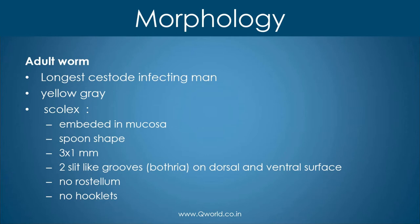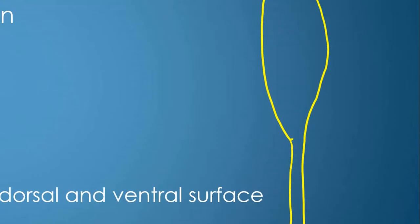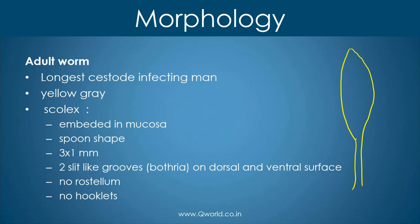Morphology. As we have already learned, this is the longest or largest cestode infecting man. It is yellowish gray in color. The head portion, also known as the scolex, is embedded in the mucosa and is spoon-shaped. It is 3 by 1 millimeter in size and has two slit-like grooves known as bothria, meaning lips, on the dorsal and ventral surfaces. It has no rostellum or hooklets like other cestodes.